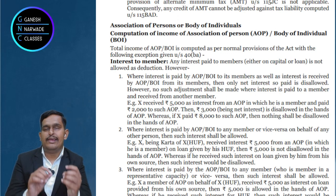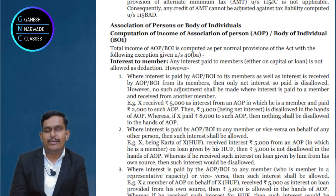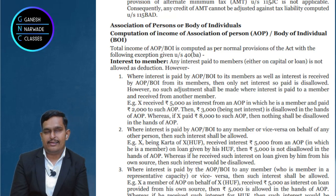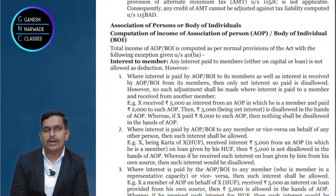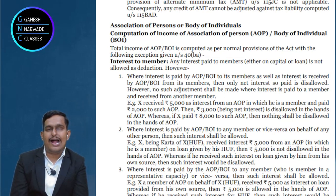But there is Section 40BA, which will put some disallowances. Suppose in the P&L account they show certain expenditure which is not right — like salary to a member of AOP. As per Section 40BA, it is not right. In accounting you can show that, but as per income tax it is not right. So what we will do? Salary is deducted, so we will add it back. When I say 40BA disallowance, I mean we have to add it back — nothing more than that.